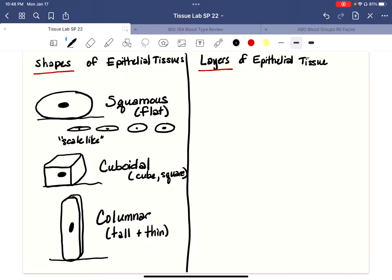So the first layer we're going to do is called a simple layer, and you can imagine that just means one layer of cells thick. So it's just one layer of cells sitting directly on a basement membrane. Now there's our squamous cells, or we could have our cuboidal. There's just a layer of cuboidal cells, and again, always stick your nucleus in there.